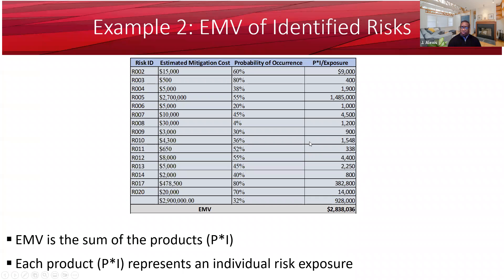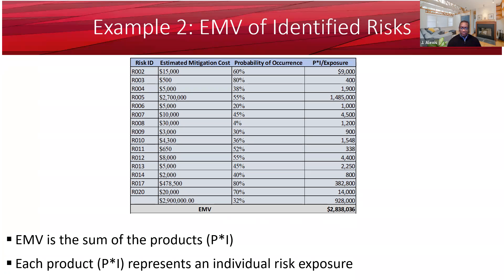Let's say you identify risks in your project, and after qualitative risk analysis, you decide to quantify some of the risks. You determine the estimated mitigation costs and associated probability. You multiply each estimated mitigation cost by its probability to get the product P×R, and then you sum them up. EMV here is the sum: 2.8 million. EMV is the sum of the products — that's what you need to remember. Each product represents an individual risk exposure.